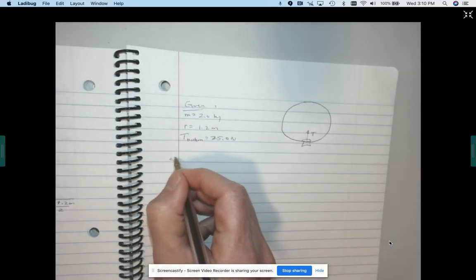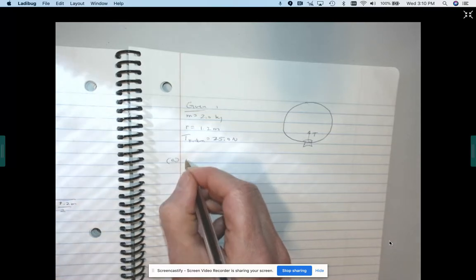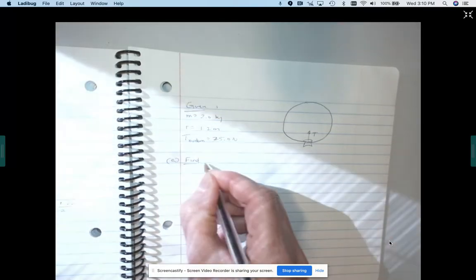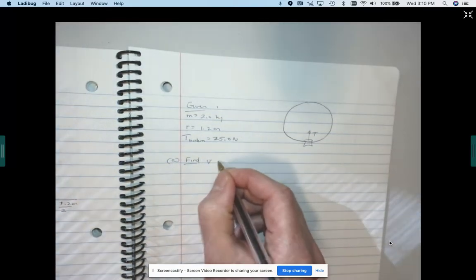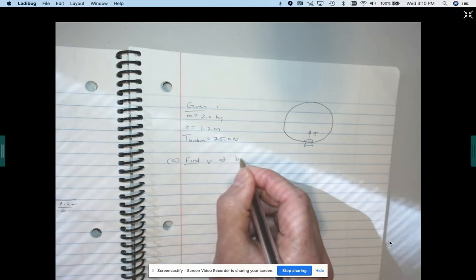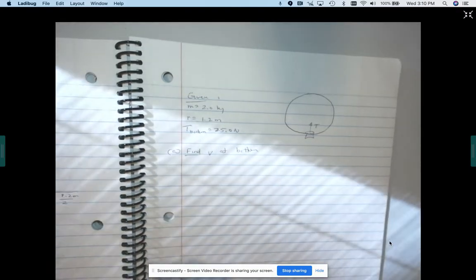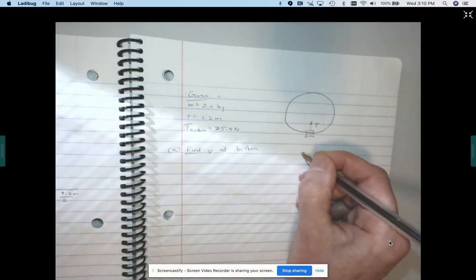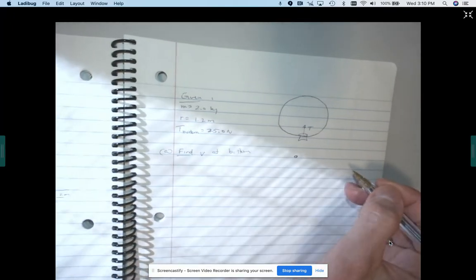So for part A, we need to find the speed at the bottom. So let's draw a free body diagram. So this is the bucket at the bottom.